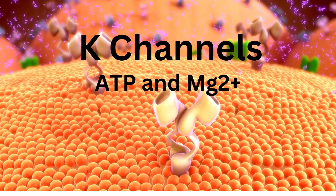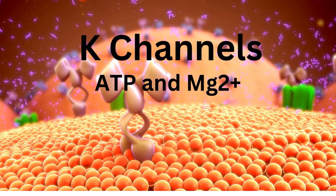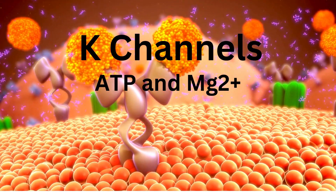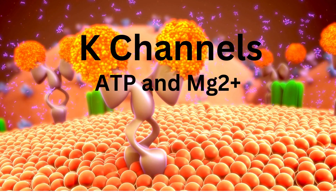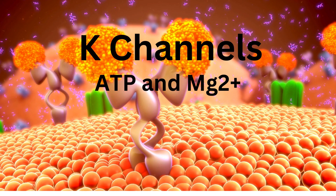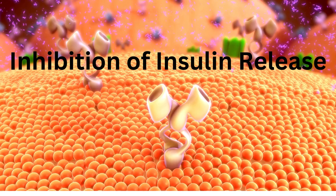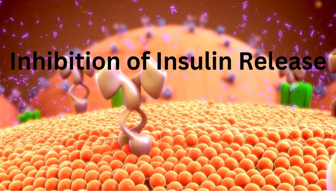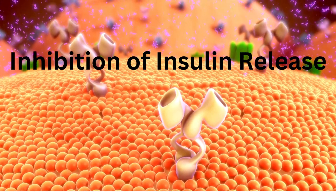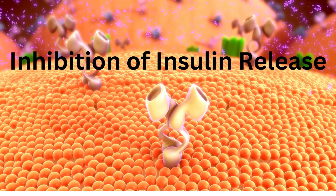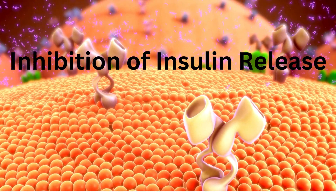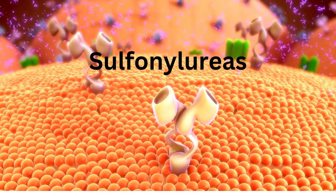Mechanism of action: Diazoxide opens ATP-dependent potassium channels on pancreatic beta cells in the presence of ATP and magnesium, resulting in hyperpolarization of the cell and inhibition of insulin release. Diazoxide binds to a different site on the potassium channel than sulfonylureas.